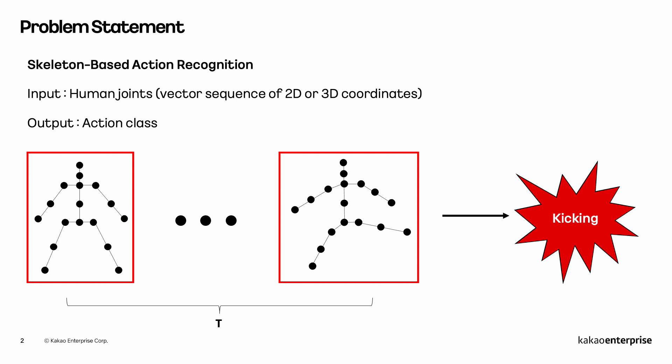Skeleton-based action recognition uses skeleton data, which can be represented as a vector sequence of 2D or 3D coordinates to recognize action classes. It can be obtained from motion capture devices or pose estimation models.